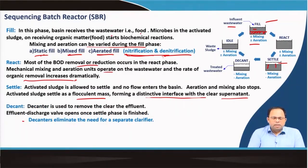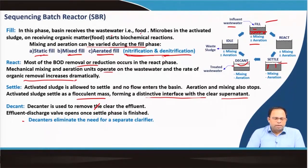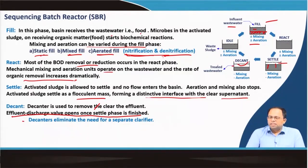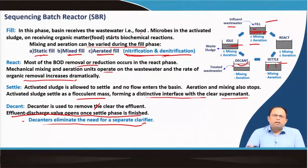In the decant phase, a decanter is used to remove and clear the effluent. We use valves at certain levels so that the upper clear liquid moves out of the chamber — the effluent discharge valve opens once the settle phase is finished. There is no need for separate clarifiers because the sludge is already settled below. Some sludge remains, but since it is almost fully digested the quantity is not that much, and we can repeat the entire process. Sometimes some sludge is also cleaned out from the chamber.